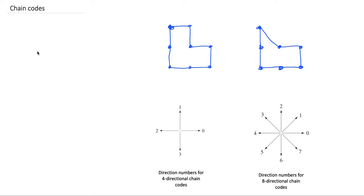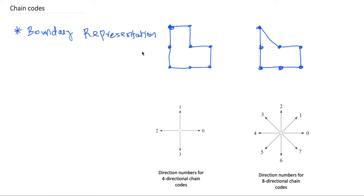In this video we will talk about the idea of chain codes. Chain codes are basically used for representing a boundary. In order to represent a boundary using chain codes, we must have the boundary as a sequence of straight-line segments of a specific length and direction. If you have a boundary formed by straight-line segments of a specific length and direction, then you can use chain codes to represent that boundary.